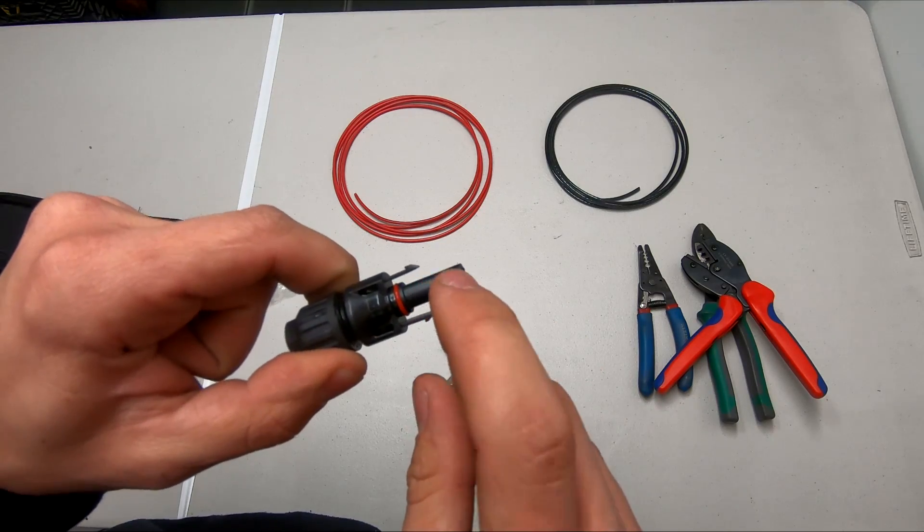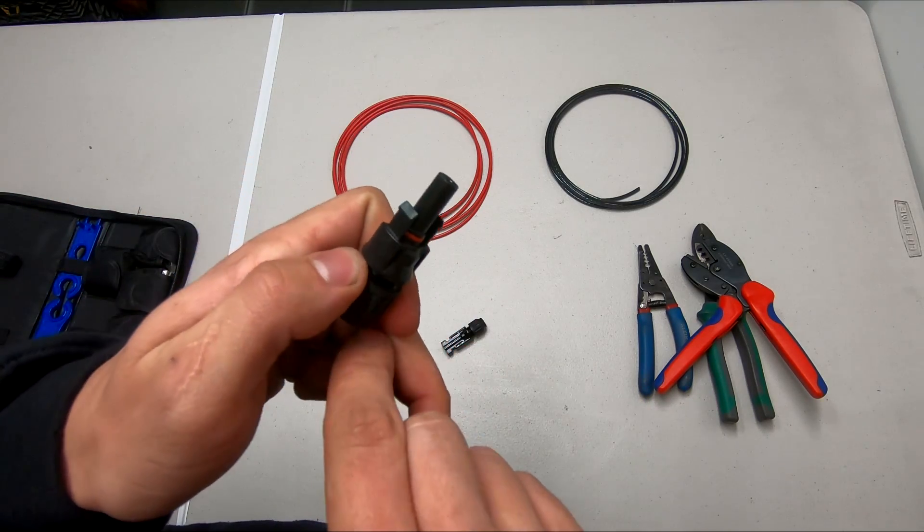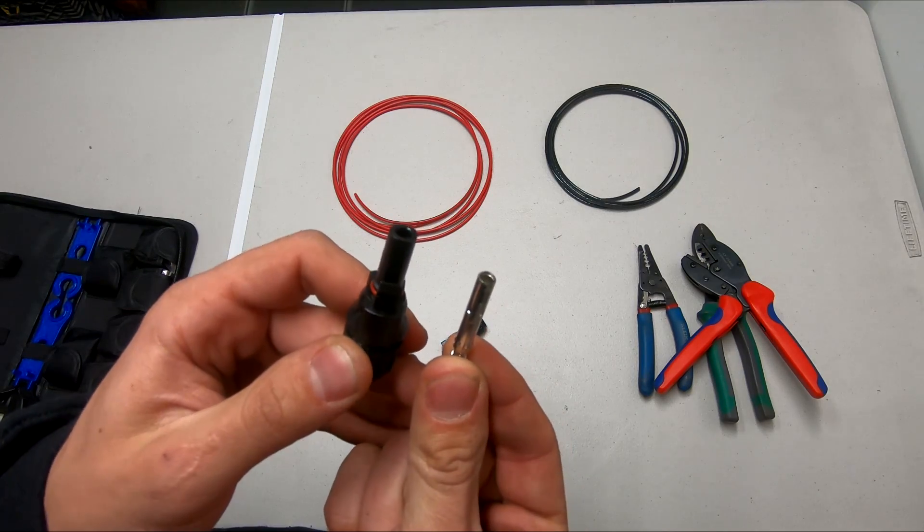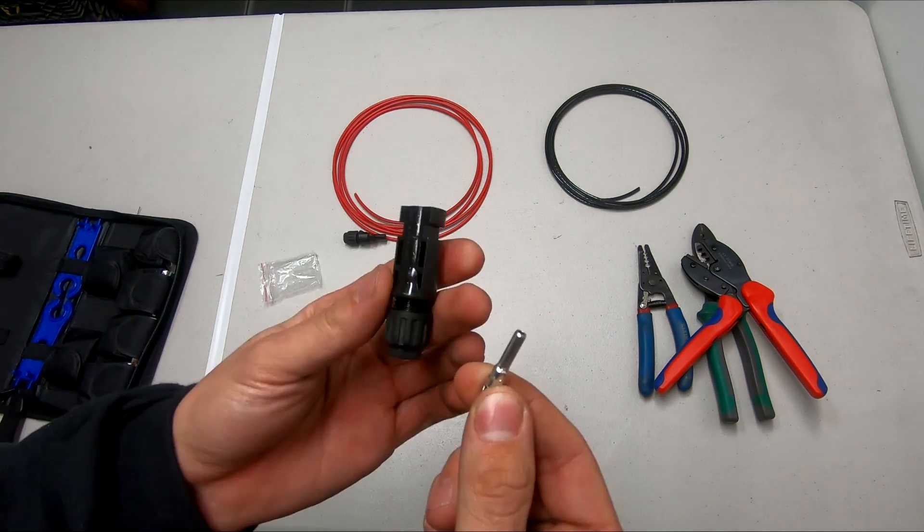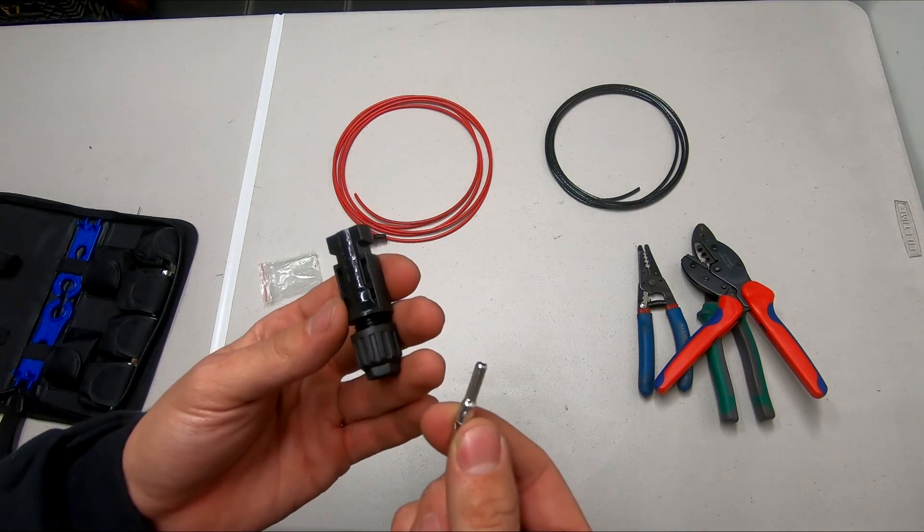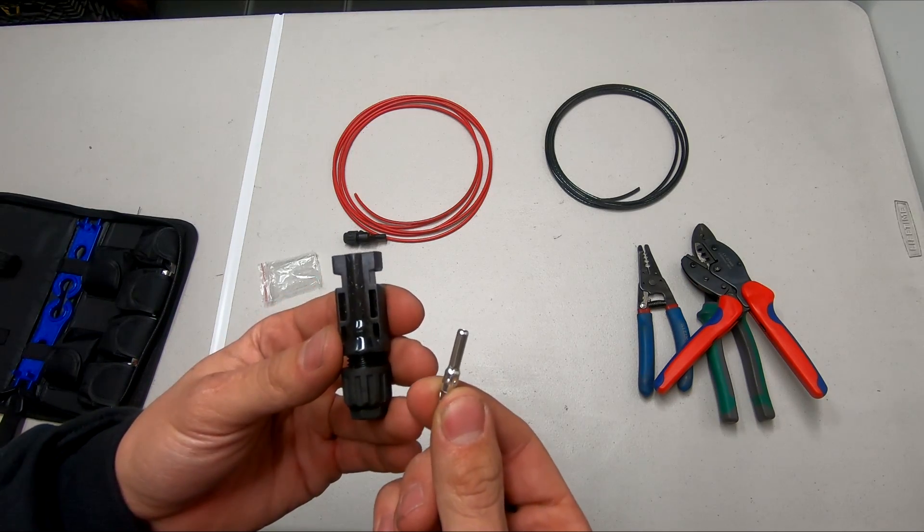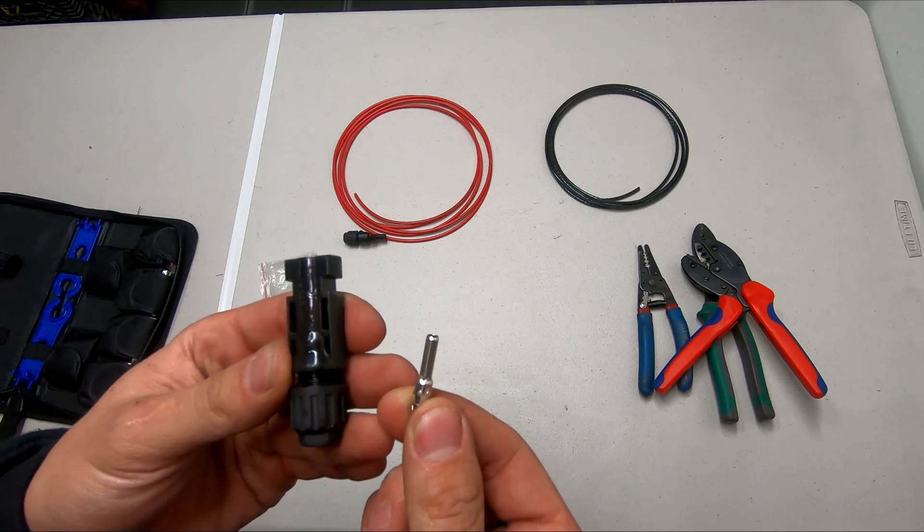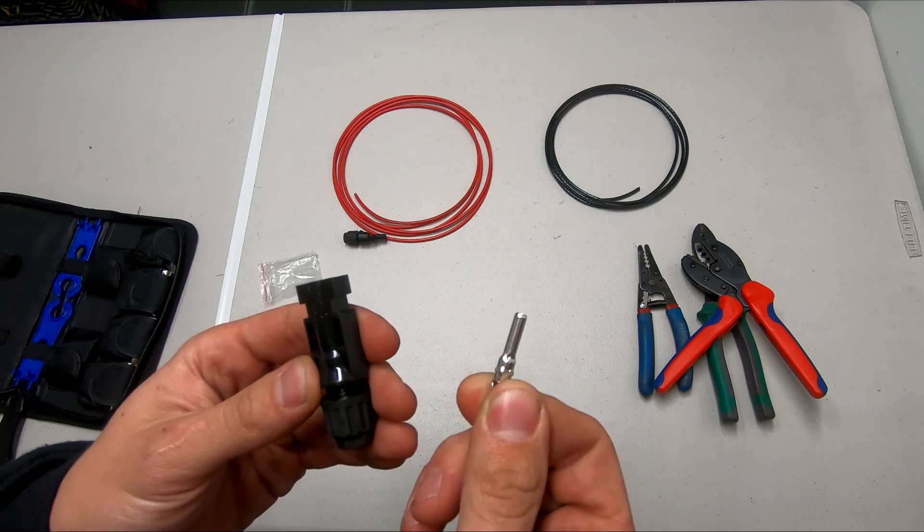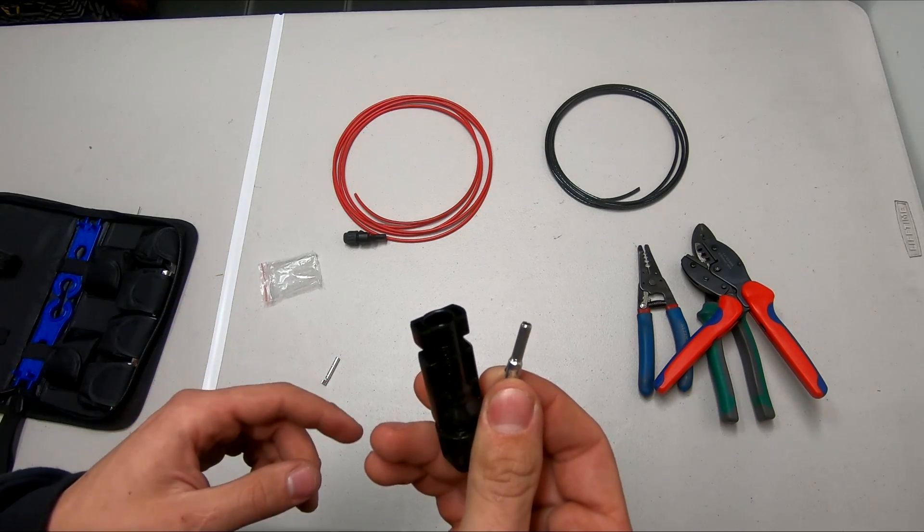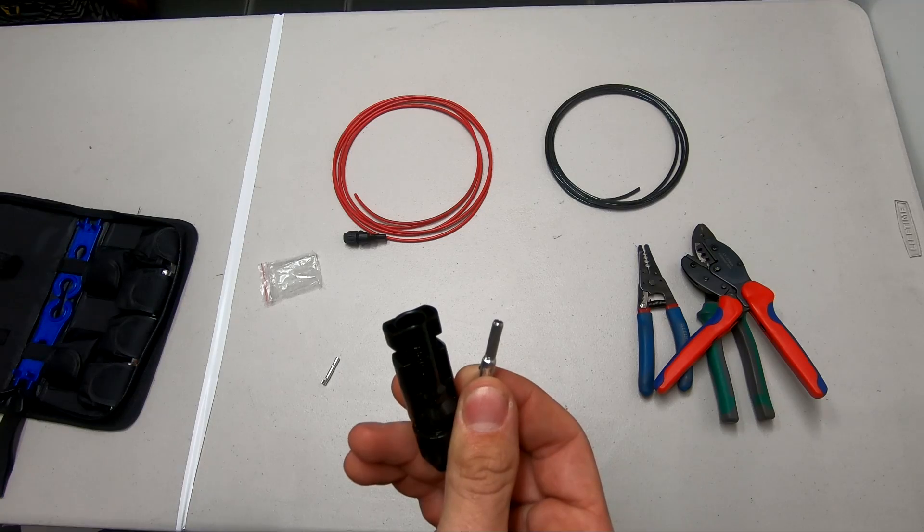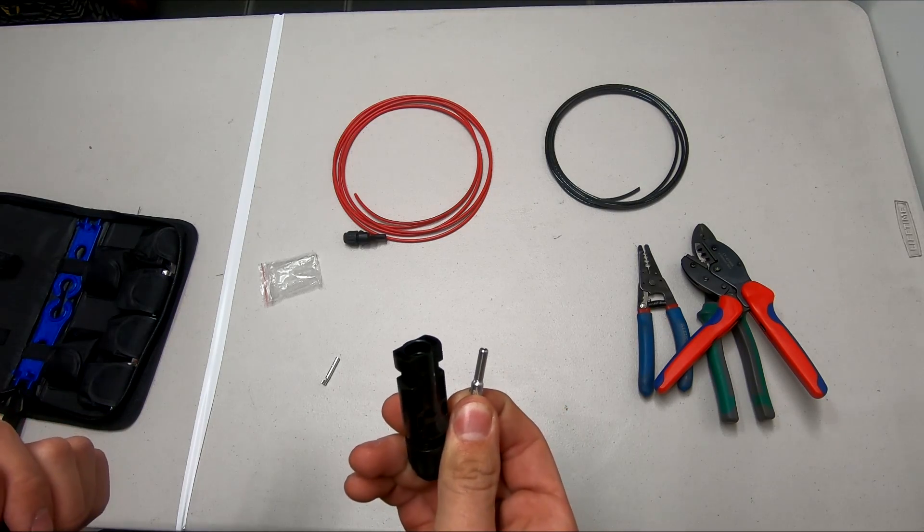As you can see on this connector, this is the male end. The female ferrule goes with the male connector and it can be kind of confusing. If you get this backwards you'll have to cut the connectors off and start over. Male ferrule goes with the female connector and the female ferrule goes with the male connector. You'll probably screw it up on your first time.